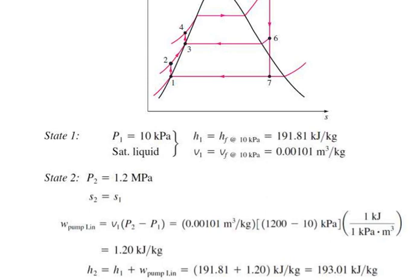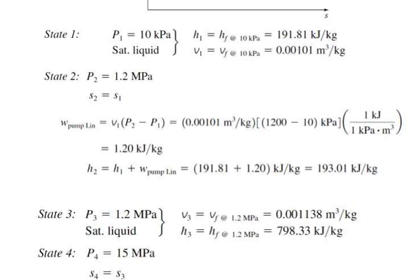H2 = H1 + W_pump1 = 191.81 + 1.20 = 193.01 kJ/kg. State 3: P3 = 1.2 MPa, saturated liquid. From steam tables: V3 = 0.001138 m³/kg and H3 = 798.33 kJ/kg. State 4: P4 = 15 MPa, entropy S4 = S3. W_pump2 = V3(P4 − P3) = 0.001138 × (15000 − 1200) = 15.70 kJ/kg. H4 = H3 + W_pump2 = 798.33 + 15.70 = 814.03 kJ/kg.